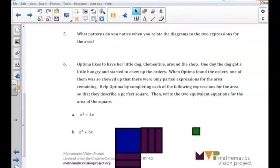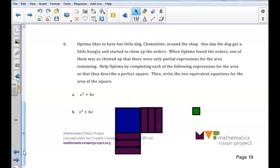In problem six, we are told that Clementine the dog ate a part of the quilt orders, and we are asked to determine the missing value of each expression that would find the appropriate area to create a perfect square. If we take a look at the expression in 6b, we can see that we would need to add nine green squares to make a perfect square.